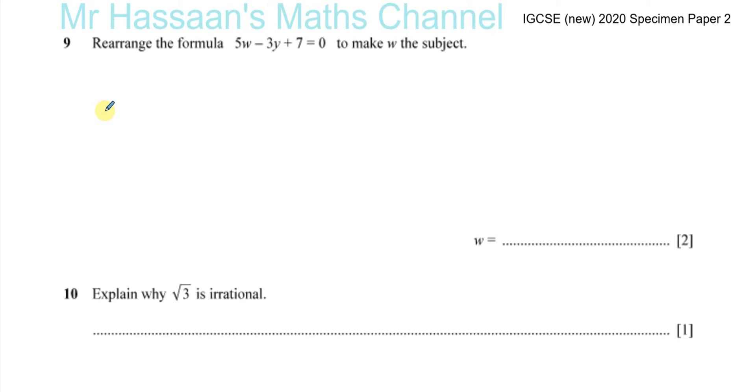Okay, question number 9 from the specimen paper 2 of the IGCSE 2020 syllabus. Rearrange the formula 5w minus 3y plus 7 equals 0 to make w the subject.